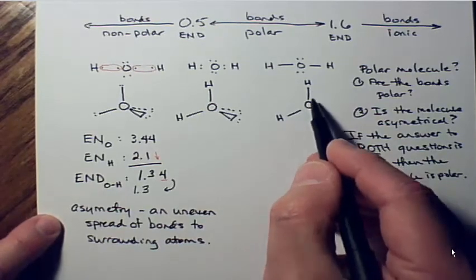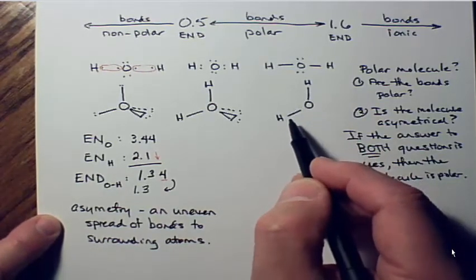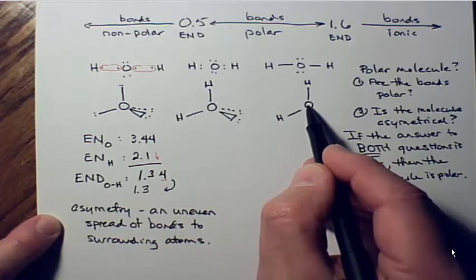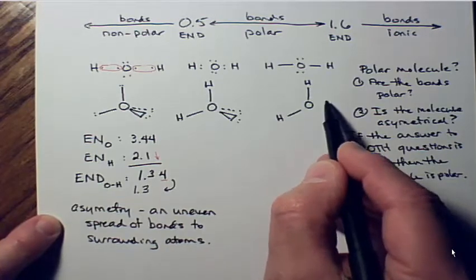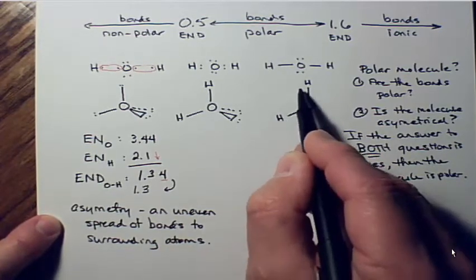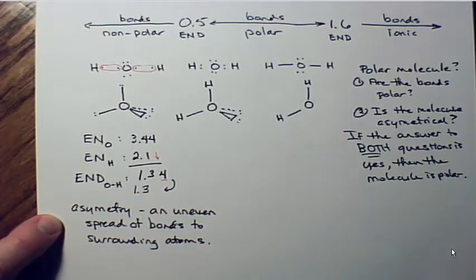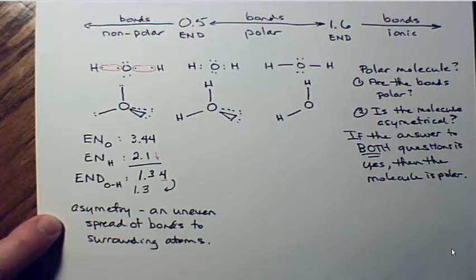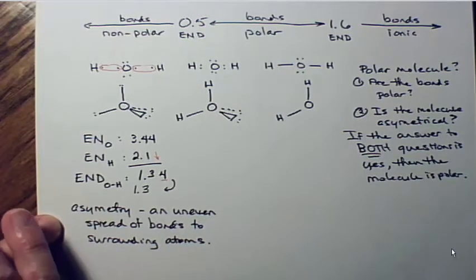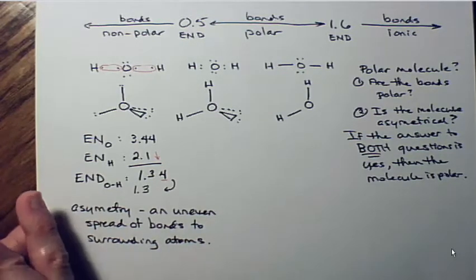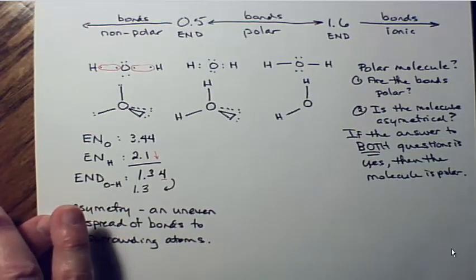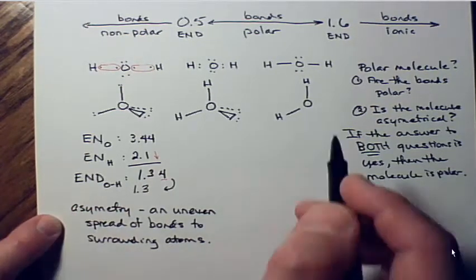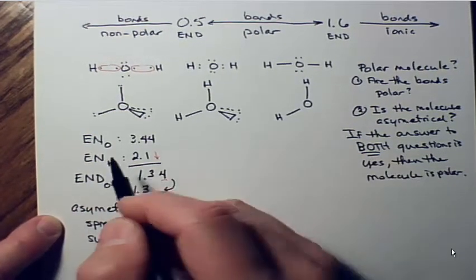We've got an uneven spread of bonds because there isn't an equal spacing around this oxygen of the same kind of bonds all the way around. It's asymmetrical — so we have a polar molecule. Now there are ways to represent polarity.